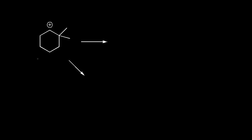Let's do another carbocation rearrangement problem — this one's actually a little bit easier than the previous one. The carbon with the plus one formal charge is directly bonded to two other carbons, making this a secondary carbocation. Let's think about what kind of shifts we could possibly have. This carbon has two hydrogens on it, so we could try doing a hydride shift with one of those hydrogens — moving it and these two electrons over to this carbon. Let's draw what we would make.